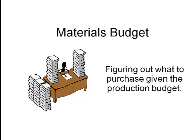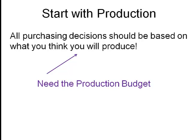We're going to work on the materials budget. You should have already reviewed the production budget video before you do this one. What do you start with? You start with the production budget, which is why I wanted you to first study that before you came here. You don't decide what you're going to buy until you first decide what you're going to produce, because you have to have enough to produce what you expect. So that's your starting point — the production budget.